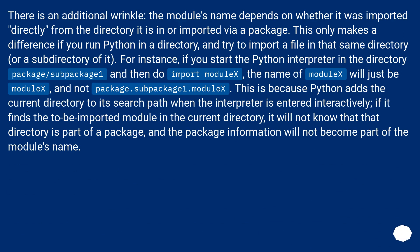There is an additional wrinkle: a module's name depends on whether it was imported directly from the directory it is in, or imported via a package. If you run Python in a directory like package/subpackage1 and then do 'import moduleX', the name of moduleX will just be 'moduleX', not 'package.subpackage1.moduleX'. Python adds the current directory to its search path, so if it finds the module there it won't know that directory is part of a package.